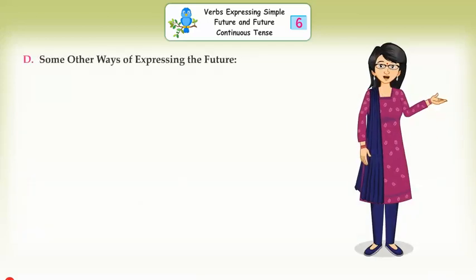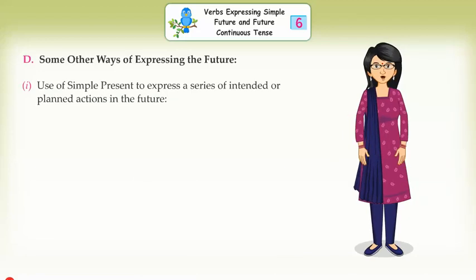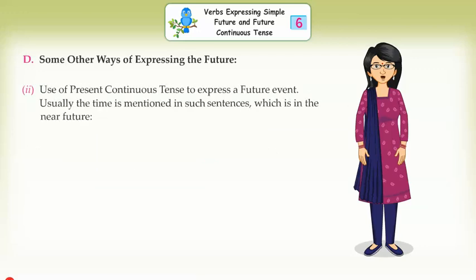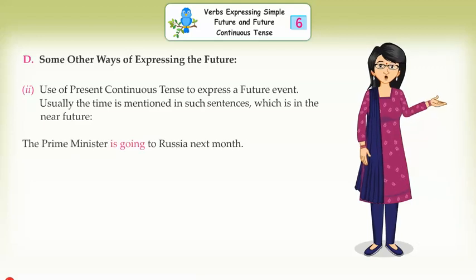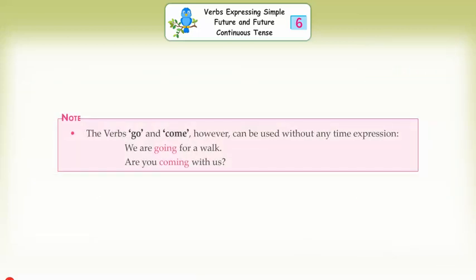Some other ways of expressing the future. First, use of simple present to express a series of intended or planned actions in the future: Our cricket team leaves for Mumbai this evening. They play two matches in Mumbai. They play one at Pune. They return next Monday. Second, use of present continuous tense to express a future event — usually the time is mentioned, which is in the near future: The Prime Minister is going to Russia next month. The college team is playing a football match with the town team next Sunday. Note: the verbs 'go' and 'come' can be used without any time expression — We are going for a walk. Are you coming with us?